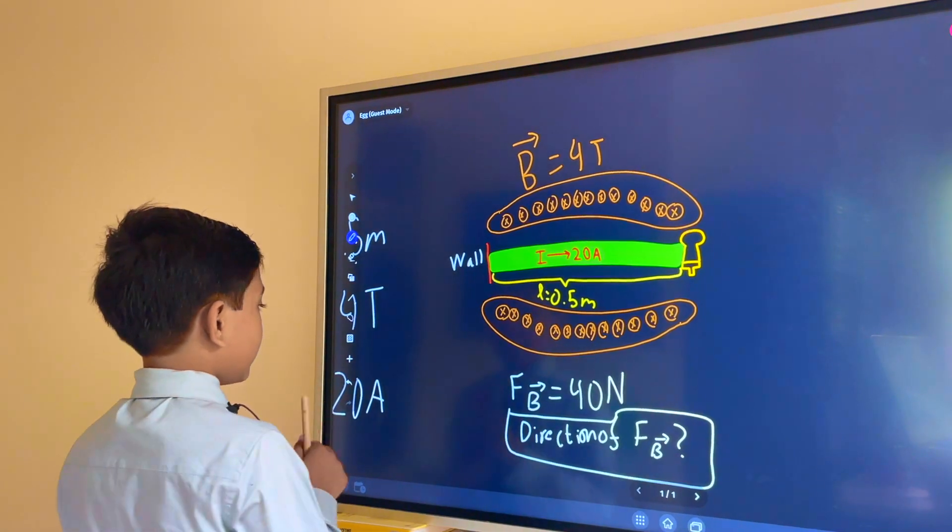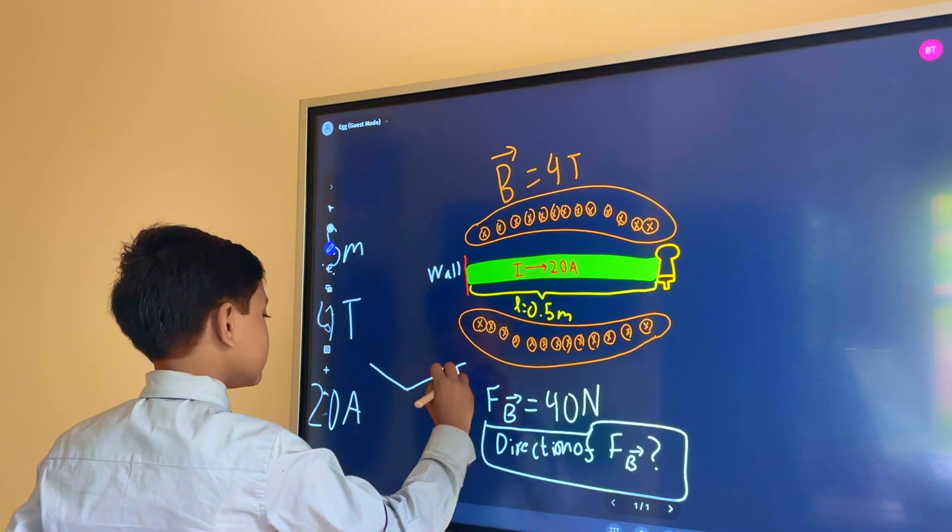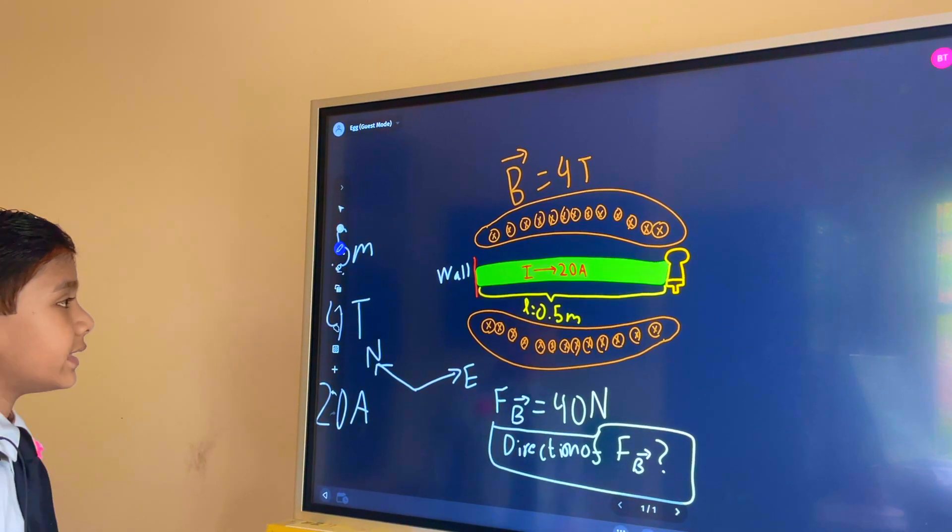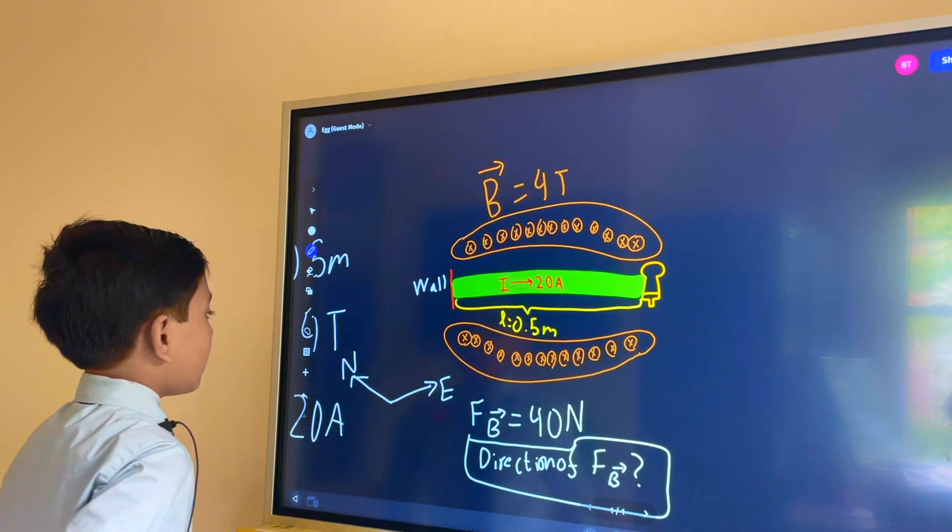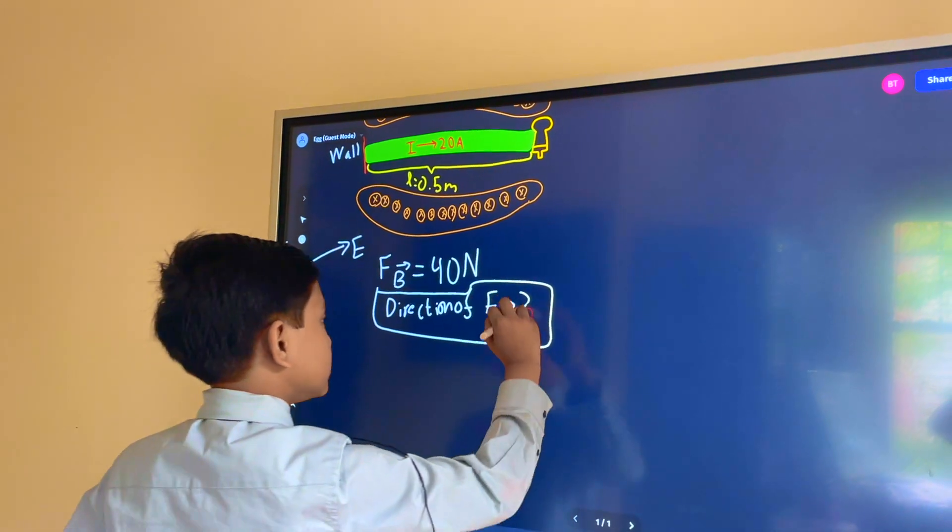So it kind of looks like this. Since this way is east then this way must be north. So that means that this is going north. Our direction of our force is north.